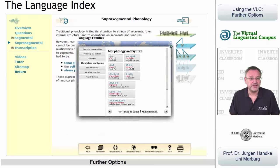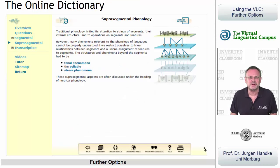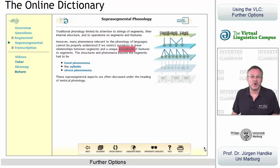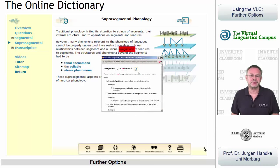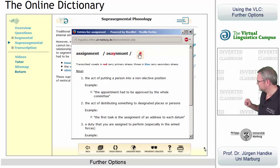A final option I would like to mention here may help if you have trouble understanding the exact interpretation of words. A double click on such a word — for example on the word 'assignment' — opens our online dictionary and presents you with one or several explanations, and optionally synthesizes the pronunciation of the word in American English. Assignment.